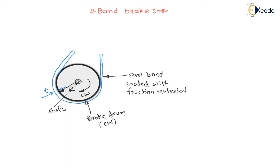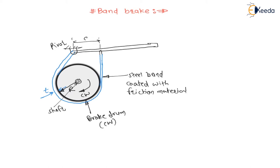One end of the band is connected to a pivot. There is a lever, and another end of the band is connected at a point on the lever at distance a from the pivot. The effort P is applied on this lever at distance a from the pivot. This is the general arrangement of a band brake. If I apply an upward effort, then we can satisfy our braking purpose.